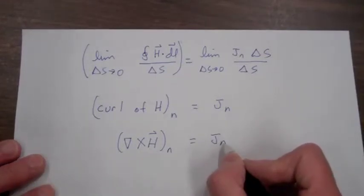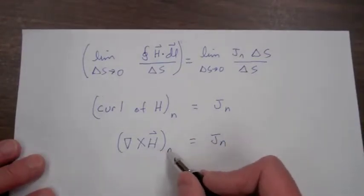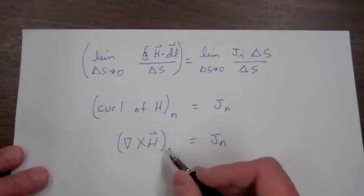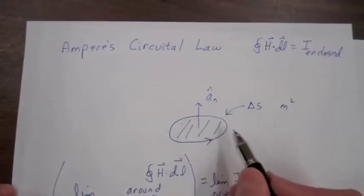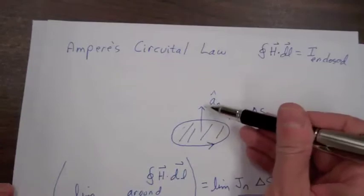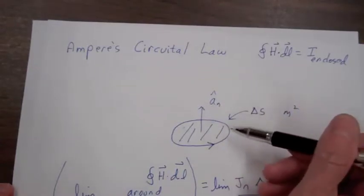So the process to find the three components of the curl of H would be to take three surface areas: one where the normal is in the x direction, one where it's in the y,